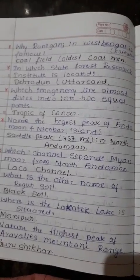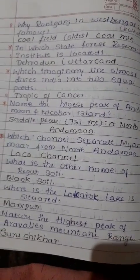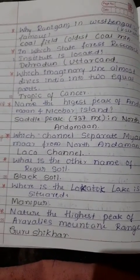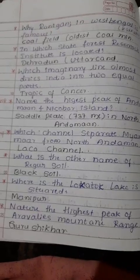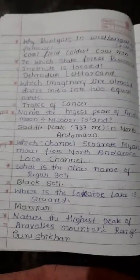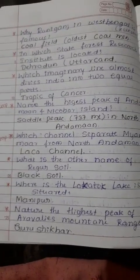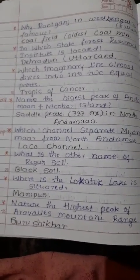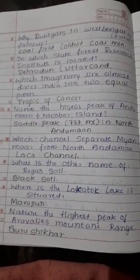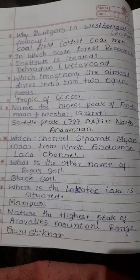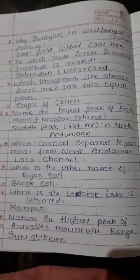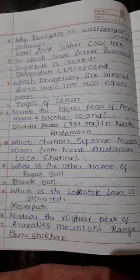Which imaginary line almost divides India into two equal parts? The Tropic of Cancer. Name of the highest peak of Andaman and Nicobar Island: Saddle Peak, 737 meters, in North Andaman. Which channel separates Myanmar from North Andaman? Coco Channel. What is the other name of regur soil? Black soil. Where is Loktak Lake situated? Manipur.